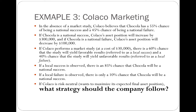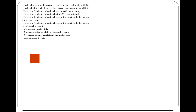Our objective is to define what strategy the company has to follow. The first time we went over this example, we solved it with the consideration that the company is risk-neutral, meaning they purely make a decision based on the expected value of their outcome. When we solve this problem without consideration of risk, we started with two decisions at the outset: test the market and do not test the market.